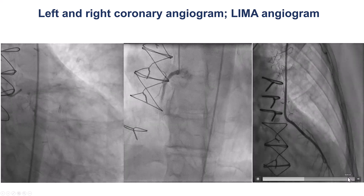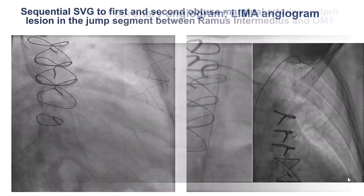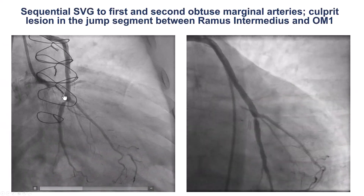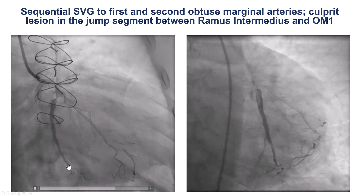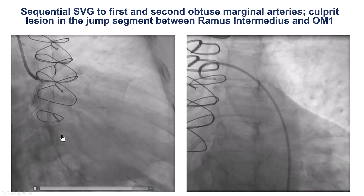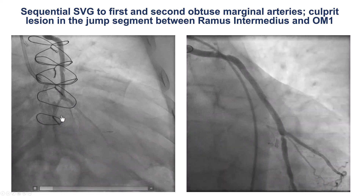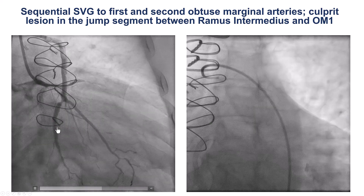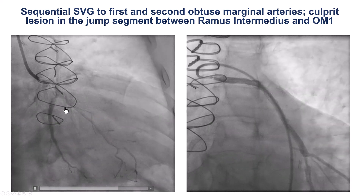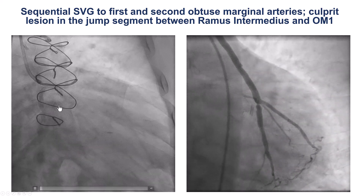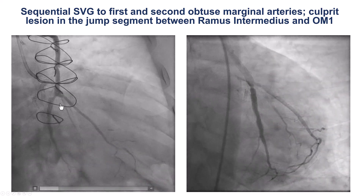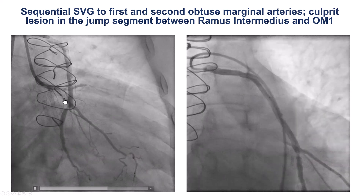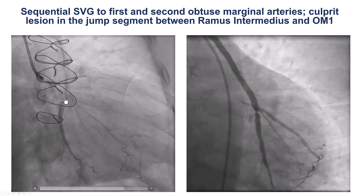There is a patent LIMA-to-LAD. The culprit lesion is the sequential SVG to the RAMUS and to the first obtuse marginal branch. The previously placed stents are in the skip segment of the graft, and the culprit lesion is just proximal to the previous stents at the touchdown of the sequential SVG down to the RAMUS branch.